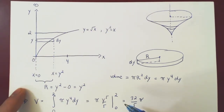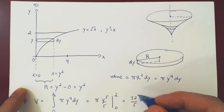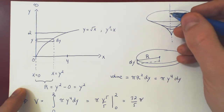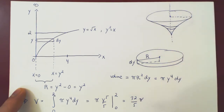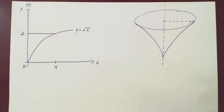If we're not making any kind of mistake, we should arrive at 32 over 5 pi, since we're finding the volume of the exact same solid using a different method.